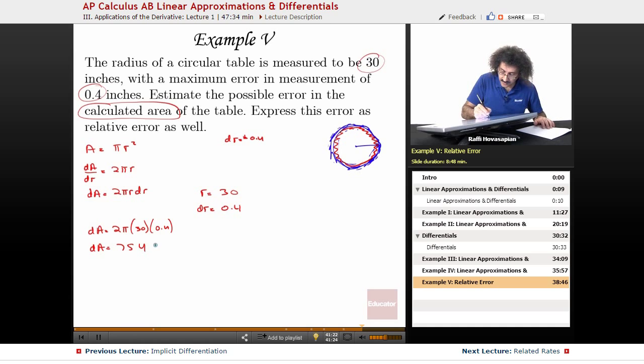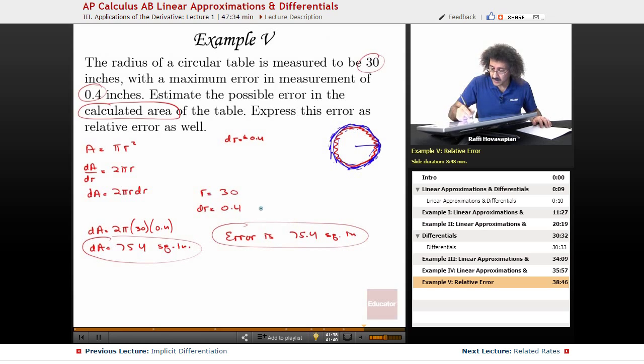dA equals 75.4 square inches. That's the error. Error is 75.4 square inches. If I made a measurement of 30, if they're telling me that my error is off by 0.4 inches plus or minus, that means the area that I calculated, the error in the area is going to be plus 75.4 or minus 75.4. That's how big of a difference my error in the area is going to be. So it's just using differentials.